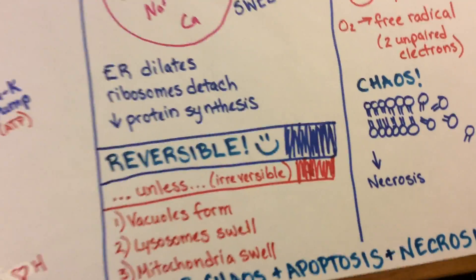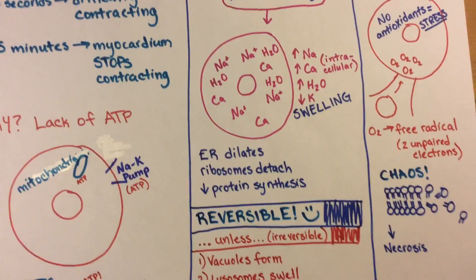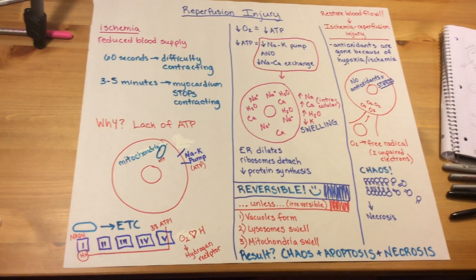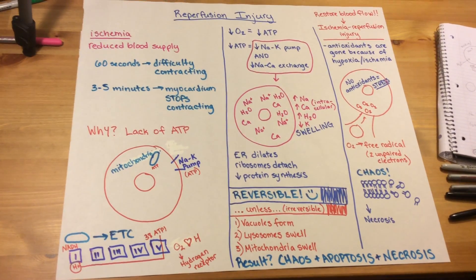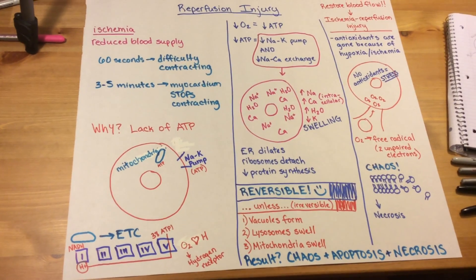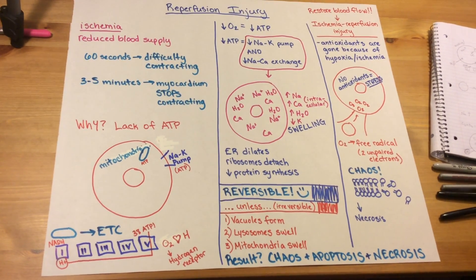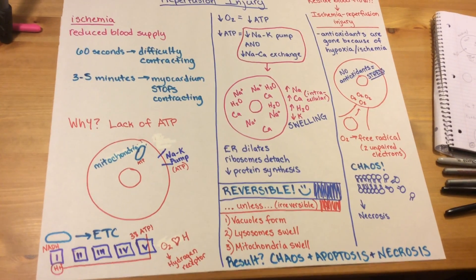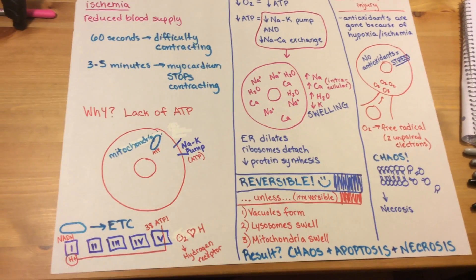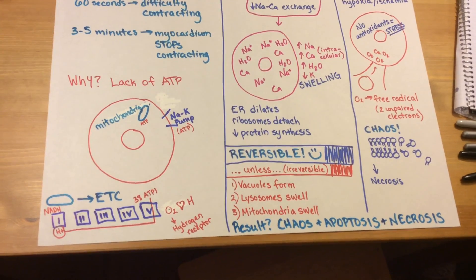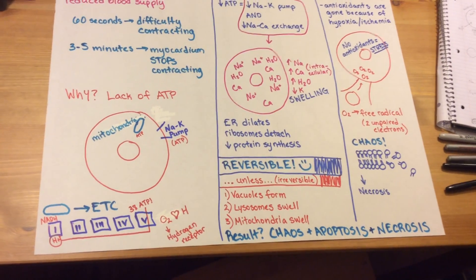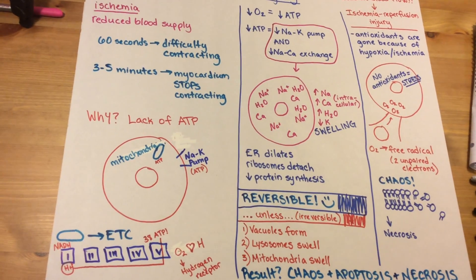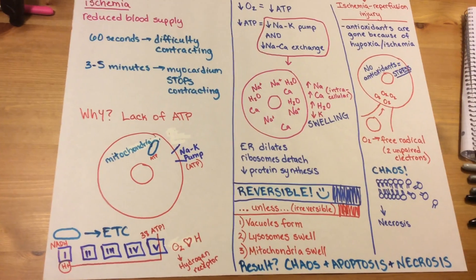A couple of additional points: white blood cells are especially sensitive to reperfusion injury. Also, reperfusion injury can cause inflammation. Furthermore, when you reintroduce oxygen back into the cell, calcium also gets reintroduced into the cell, and that additional calcium influx causes more damage and speeds up the process of necrosis.